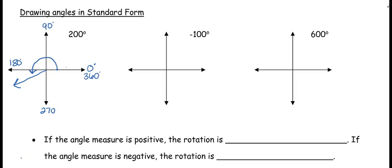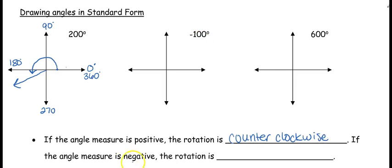The direction that the arrow is going is really important. In the next example we have negative 100 degrees. When you have a positive angle measure, you're going to be doing your rotation counterclockwise. If the angle measure is negative, then the rotation is going to be clockwise. So if I have negative 100, instead of rotating to the left counterclockwise, we're going to be rotating to the right clockwise.